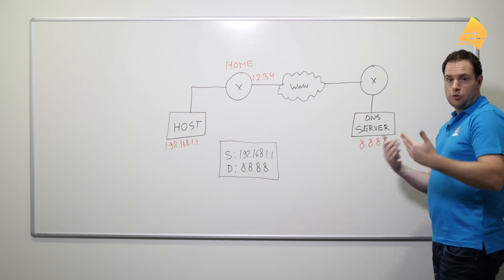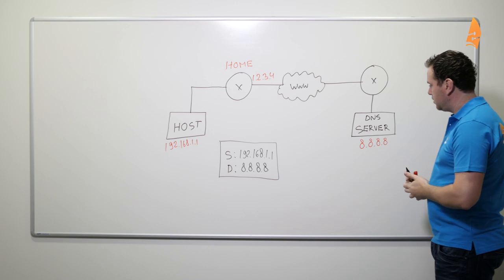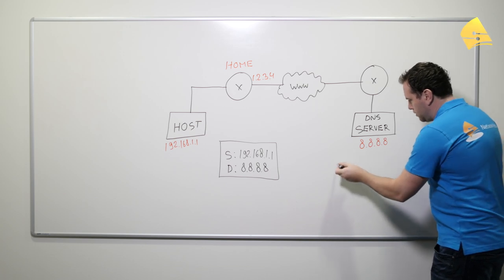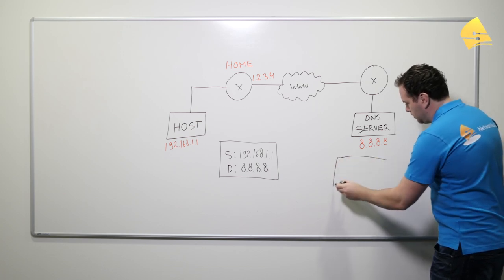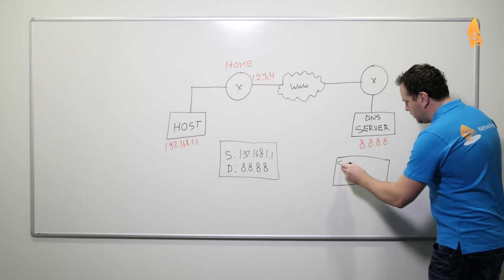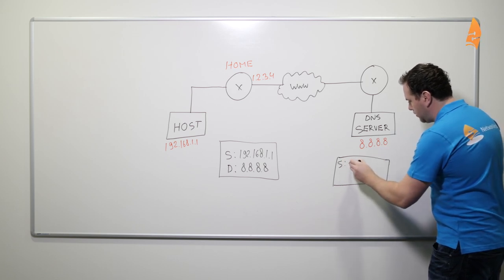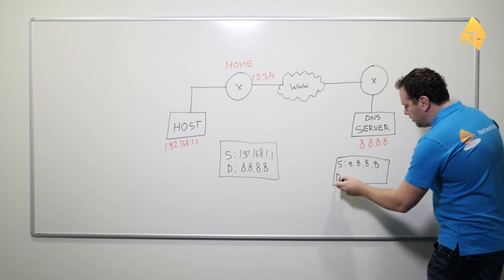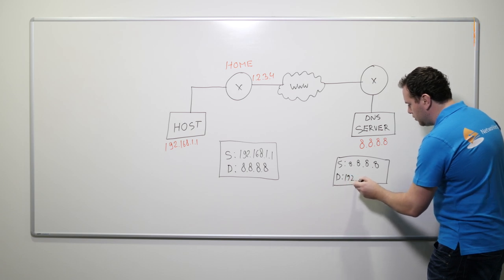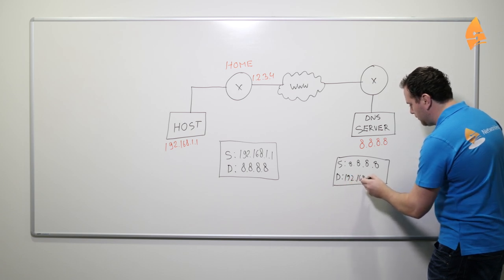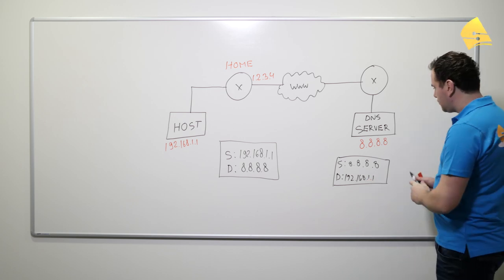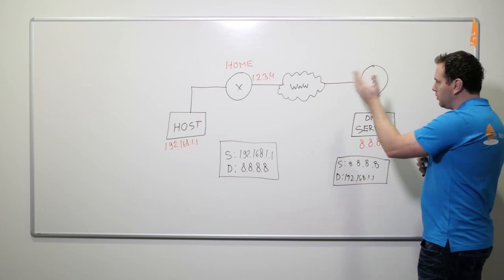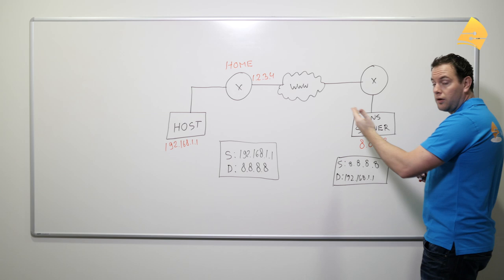And the server will do something with it and probably wants to send an IP packet of its own to the host. This IP packet will have the source 8.8.8.8 and the destination which will be 192.168.1.1. The server will forward this IP packet to the router, and the router that is connected to the internet might even forward it to its ISP.